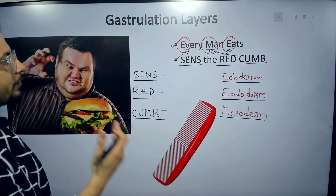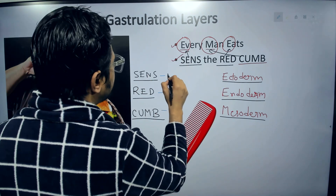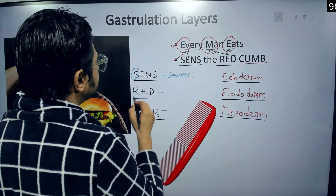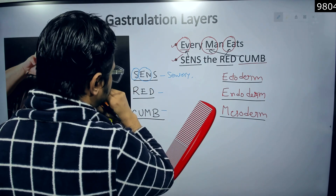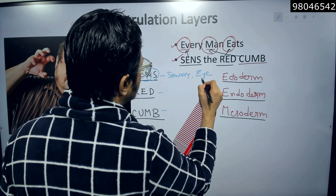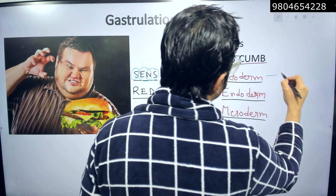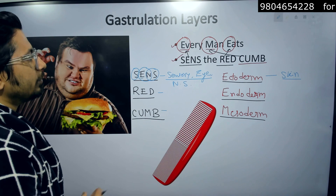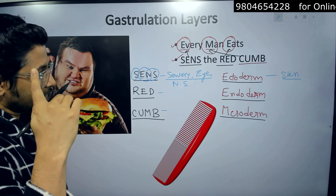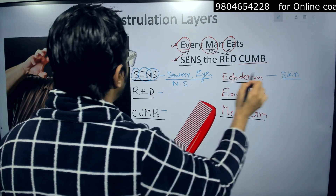From ectoderm, we have SENS. S is for sensory system, N-S is for nervous system, E is for eye, and S is for skin. So from ectoderm we get: sensory system, nervous system — that is the central nervous system, the brain and the spinal cord — eye as a sensory organ, and skin. All are produced from ectoderm.